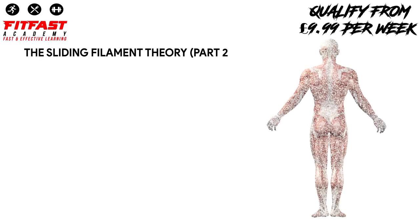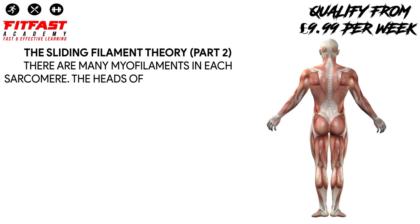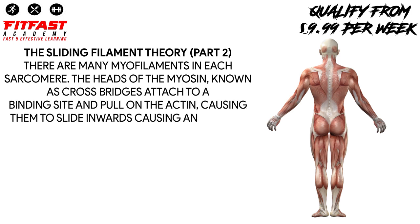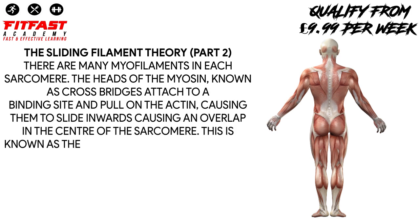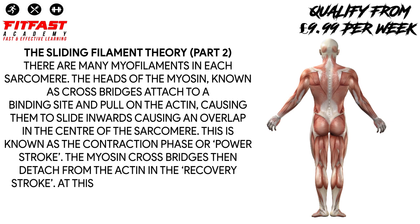There are many myofilaments in each sarcomere. The heads of the myosin, known as cross bridges, attach to a binding site and pull on the actin, causing them to slide inwards, causing an overlap in the center of the sarcomere. This is known as the contraction phase or power stroke.